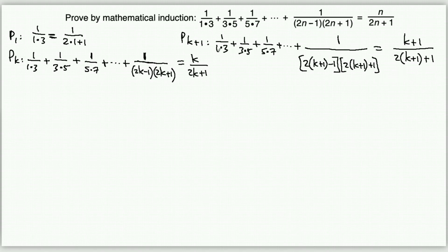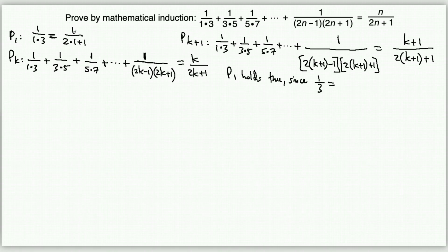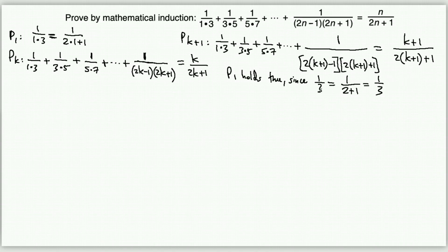Now we prove P(1) holds true. The left side gives 1/(1·3) = 1/3. The right side gives 1/(2·1+1) = 1/3. Both sides equal 1/3, so the P(1) statement is verified to be true.